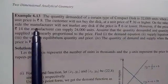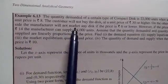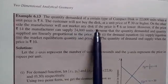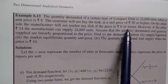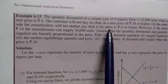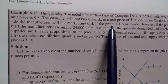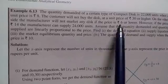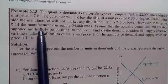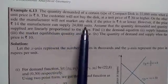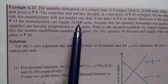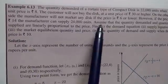On the other side, the manufacturer will not make any disc if the price is Rs.6 or lower. If the price is Rs.14, the manufacturer can supply 30,000 units. On the other side, the manufacturer can supply 20,000 units.